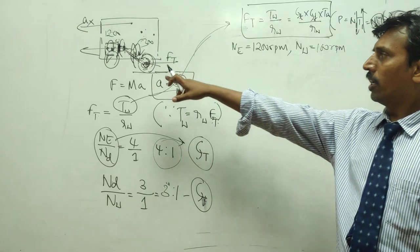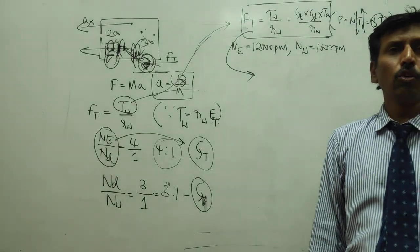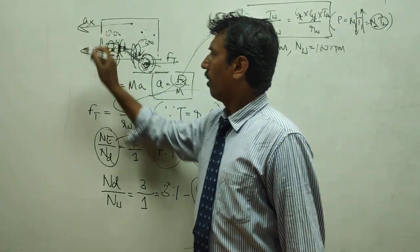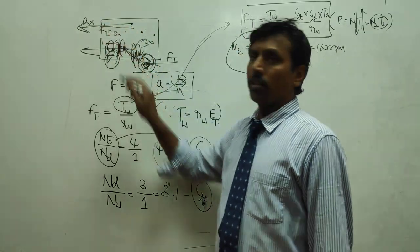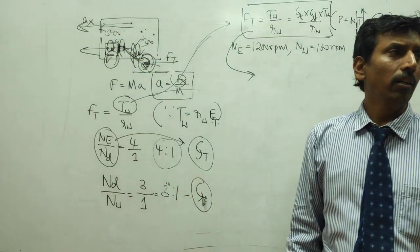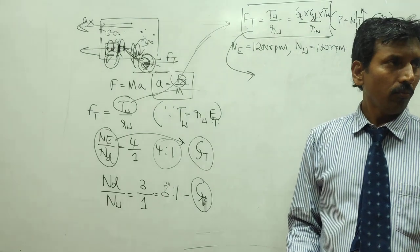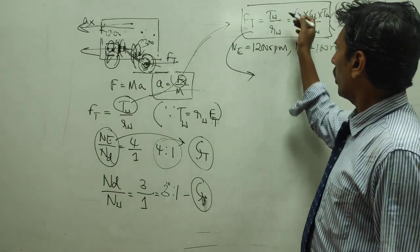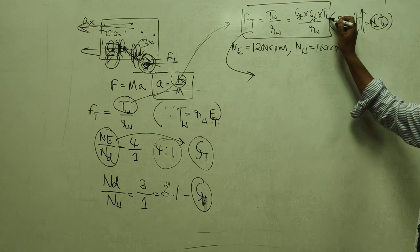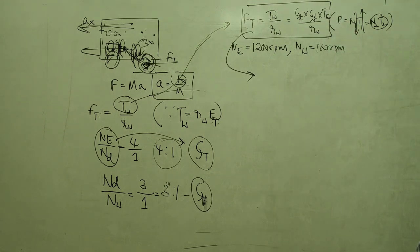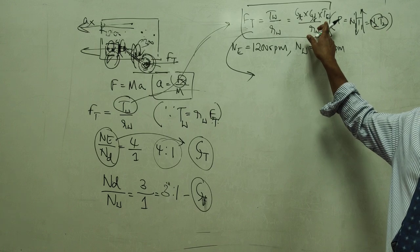However, when a vehicle accelerates forward, it is not just the translating parts that are accelerating — there are also rotating parts which offer resistance to rotation. Therefore, not all of the engine torque TE reaches the wheel. The torque TE will be reduced because the rotating components have inertia.